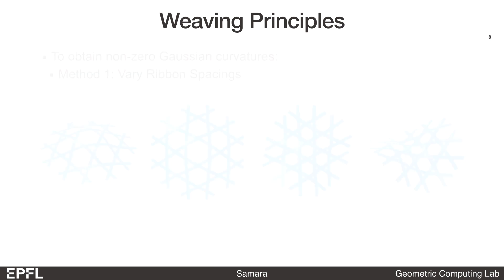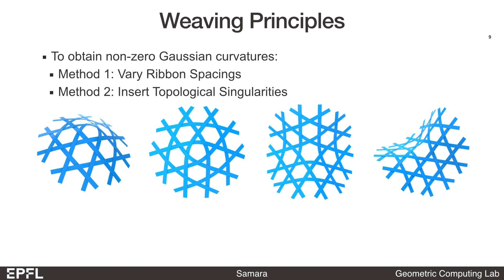A second well-known practice is to introduce topological singularities into the weaving pattern. This is similar to how one can make a cone from a flat piece of paper. For the triaxial pattern, replacing one of the hexagons by a pentagon or any polygon with less than six sides will induce positive Gaussian curvature. And replacing it with a heptagon or any polygon with more than six sides will induce negative Gaussian curvature.